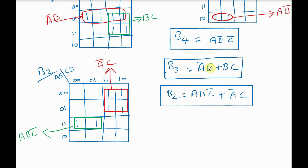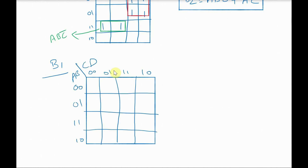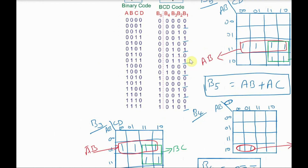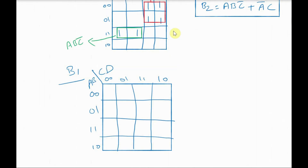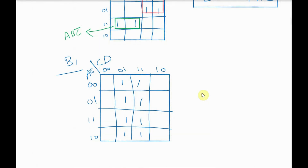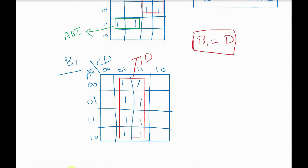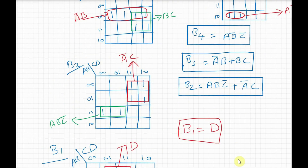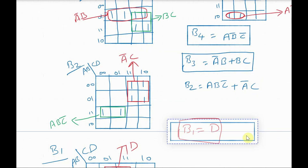And finally, we have to find b1. Again we have to draw the Kmap. Looking at the truth table, b1 is 1 for cases 1, 3, 5, 7, 9, 11, 13 and 15. These are the cases in which b1 is 1. When we group, we can have all these 8 cells together and the group value is d. Therefore, b1 is equal to d.